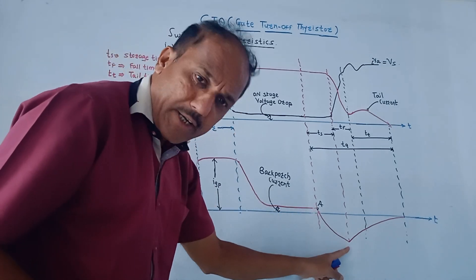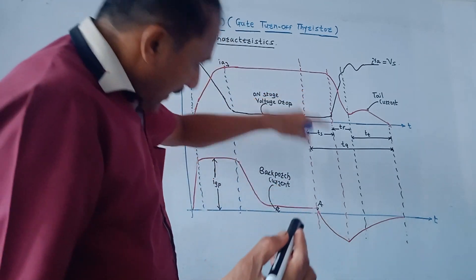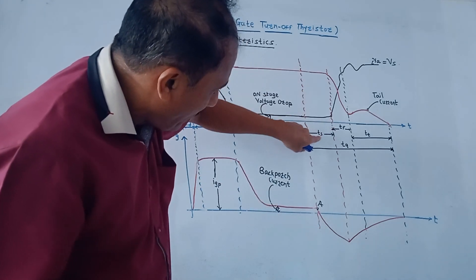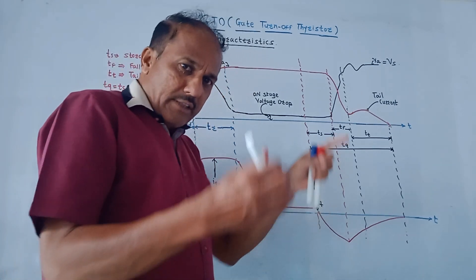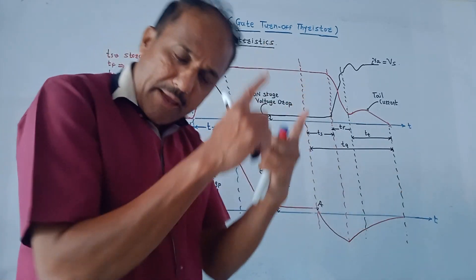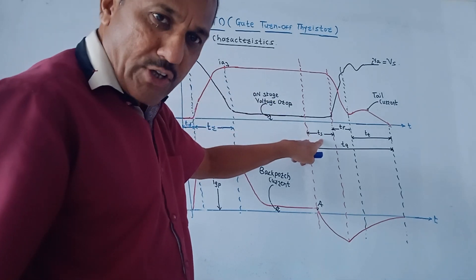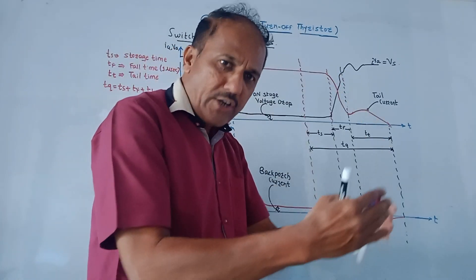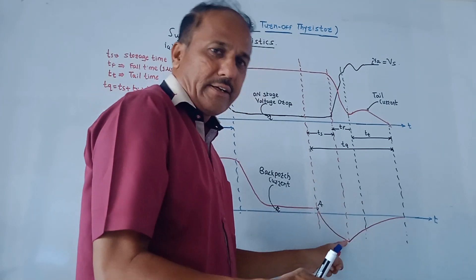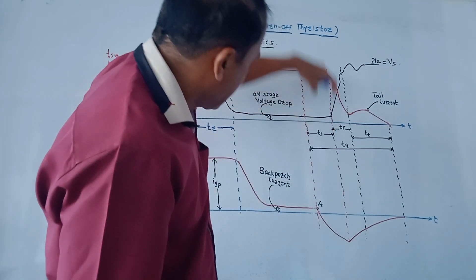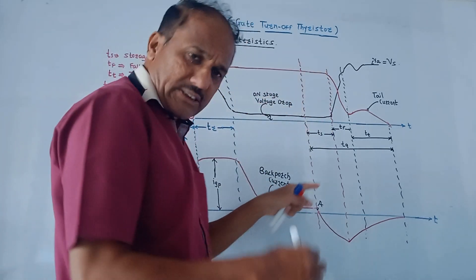Once the negative gate pulse is applied at point A, the turn off process takes place. The first time period is called ts — storage time. Whenever the negative gate pulse is applied, excess charges are removed. The time required to remove these excess charges is called storage time ts. During ts, the value of anode current Ia and anode voltage Va remain constant.